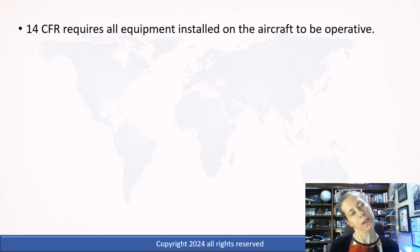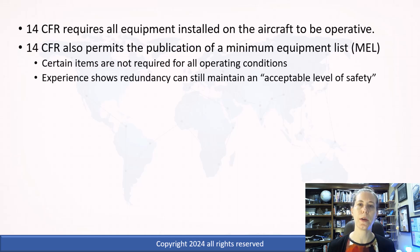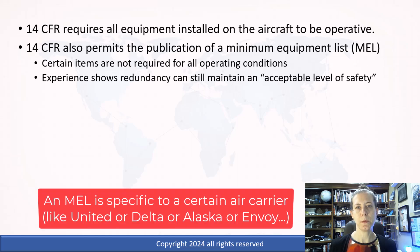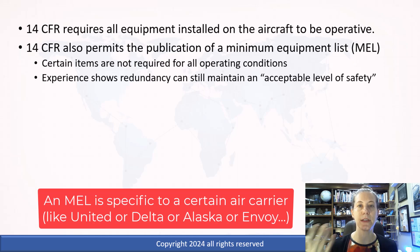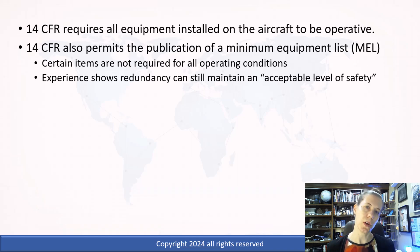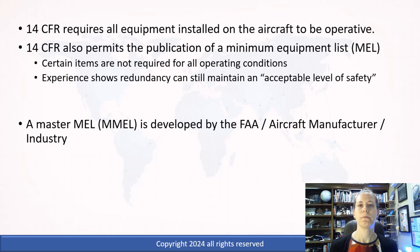The FAA also allows us to operate with a minimum equipment list. This is an operator-specific item. We have found that you don't have to have everything operational to still maintain an acceptable level of safety. So there is some redundancy, especially with large aircraft. What happens is the FAA and manufacturer — Boeing, Airbus,